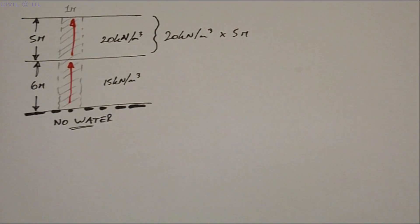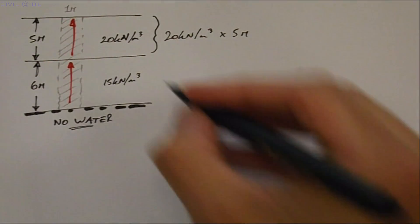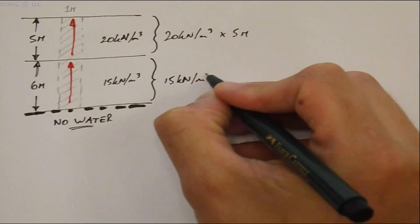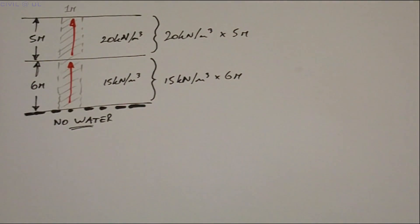And we add to this strata two which is 15 kilonewtons per meter cubed multiplied by six. Adding these together we get 190.